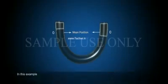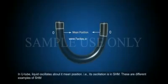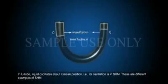In this example, in a U-tube, liquid oscillates about its mean position. That is, its oscillation is in SHM.